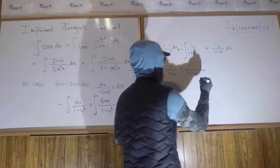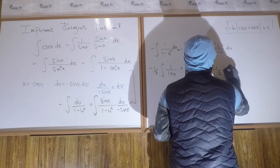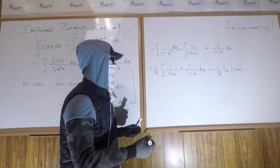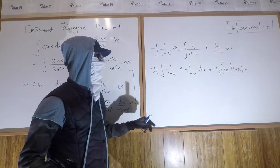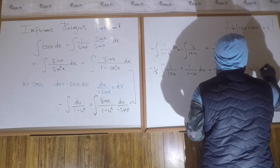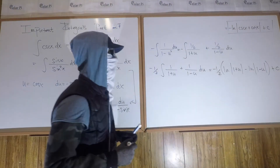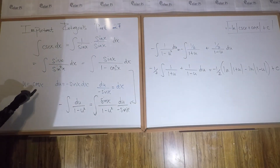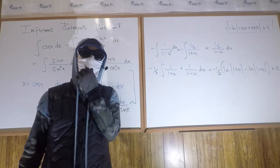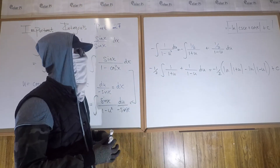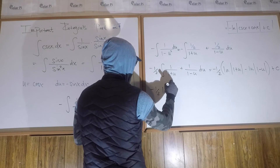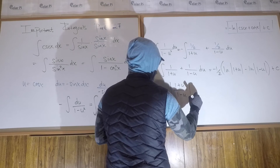This is going to be equal to negative 1 half times the natural log of the absolute value of 1 plus u, minus — look at the detail of why — minus the natural log of the absolute value of 1 minus u, plus C. We can use the log quotient rule to combine these two, so we write negative 1 half natural log of the absolute value of (1 plus u) over (1 minus u), plus C.